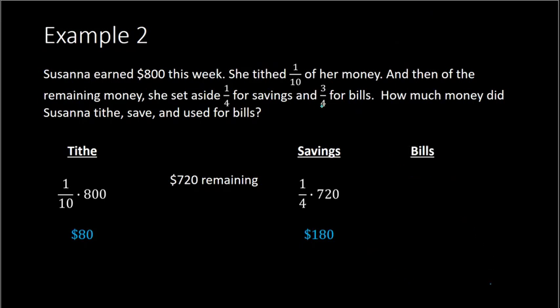And then from here, three-fourths went towards her bills. So we can do three-fourths times 720. A quick way to do this: we know one-fourth is 180. So if we take that times 3, that gives three-fourths. So 180 times 3 would give us our answer for the amount spent on her bills. 180 times 3, we do 3 times 0 to get 0, 3 times 8 is 24 carry the 2, 3 times 1 plus 2 is 5. So $540 went toward her bills. And we can double-check this because if we add all this together, 540 plus 180 is 720, and then 720 plus the other 80 for the tithe gives you 800 total, which is what she started with.